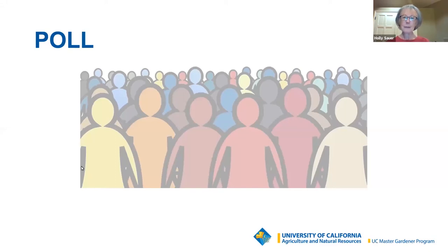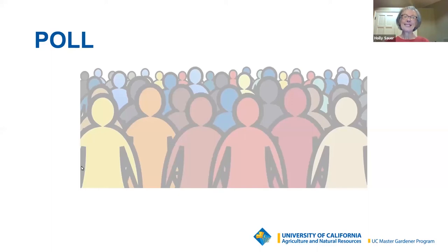With about 90% participation in the poll, the results show lots of folks are interested in perennials — the most popular choice — followed by succulents, herbs, house plants, and shrubs, with a few others. It doesn't look like Holly scared anyone away!